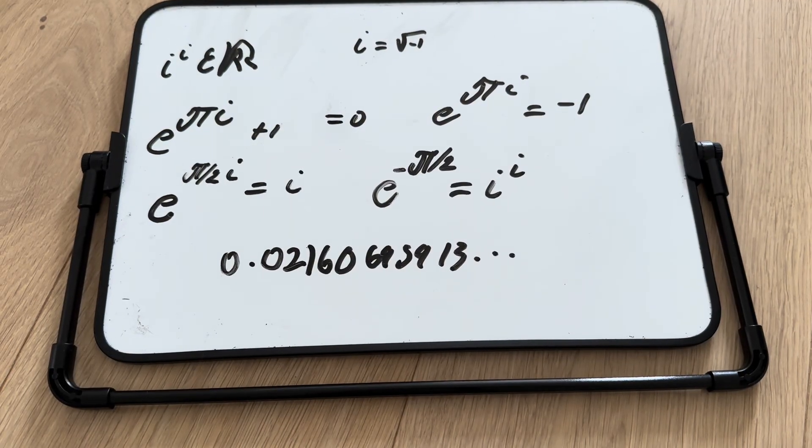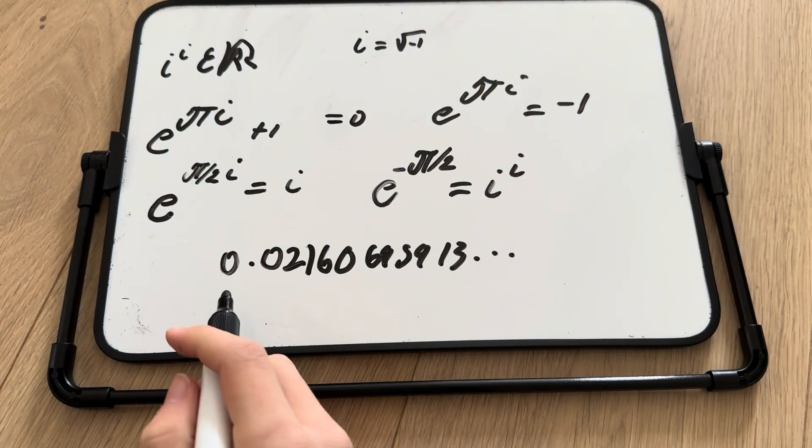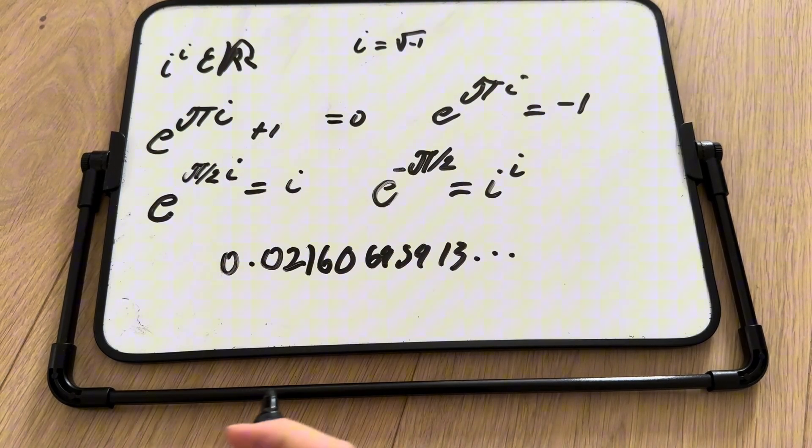And I just checked, e to the power of negative pi over 2 is 0.02160695913 going on forever. It's also a transcendental number.